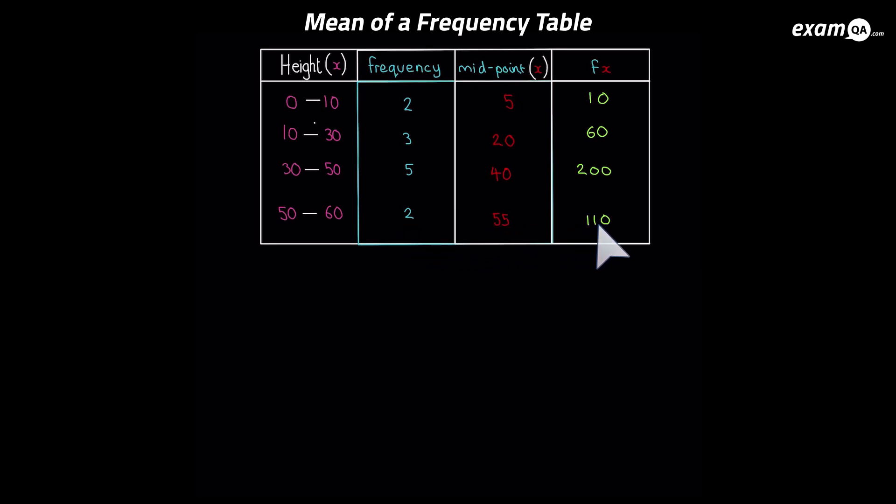Now pause the video again and try to think, what did we do last time? So we summed up the fx column, we got the total of the fx column. And that gives you the sum, which of course is 380. Now remember, we need the n. How did we get the n, the number of values last time? And you should have said we totaled the frequency column. The total of the frequency column gives you how many values you've got. The n value. So our n is indeed 12.